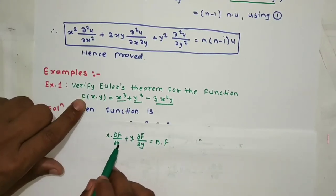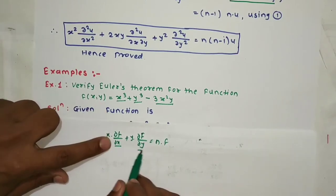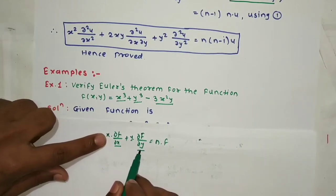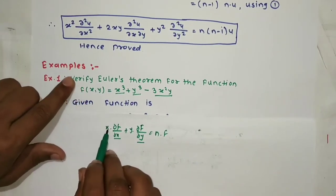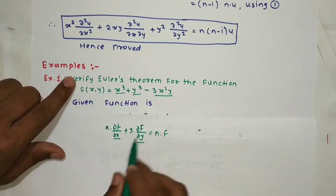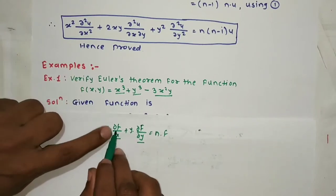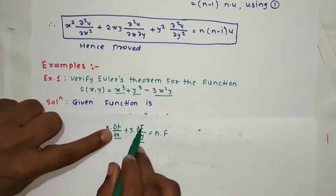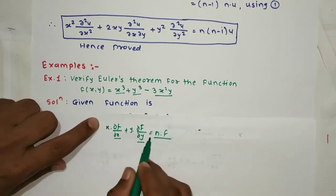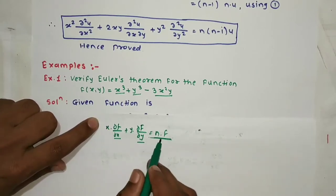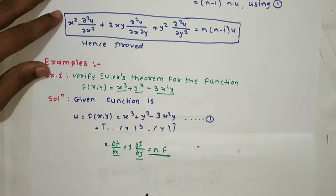We are given f, and we calculate the partial derivative with respect to x and with respect to y. Then we consider the LHS, calculate the value, put the formula, and show that it equals n · f. It's quite easy.